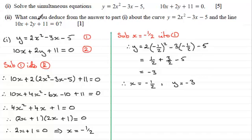Okay, so in part 2 now, it says what can you deduce from the answer to part 1 about the curve y equals 2x squared minus 3x minus 5 and the line 10x plus 2y plus 11 equals 0 for one mark. So just give you a moment to think about that one, if you want. Okay, well, what did you come up with?